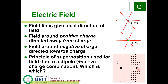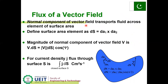Flux of vector field: the normal component of a vector field transports through the cross element of surface area. Define the surface area element as dS equals dA₁ cross dA₂. The magnitude is equal to |dA₁| times |dA₂| times sin(90°), because the angle between dA₁ and dA₂ is 90 degrees. The magnitude of the normal component of vector field v is v dot dS.